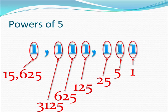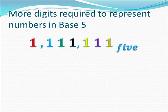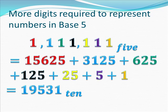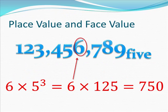If we wanted to know what this number would be equivalent to in the base 10 number system, we have some work to do. We would have to take each one of the digits, write down how much it's actually worth, add it up, and we find out that in base 10, this is actually 19,531. The more digits are required to represent numbers in base 5, a smaller base. If we throw in a face value bigger than 1, we have to multiply the face value times the place value. In this case, the 6 would represent 6 times 5 to the third, or 6 times 125, which is 750.